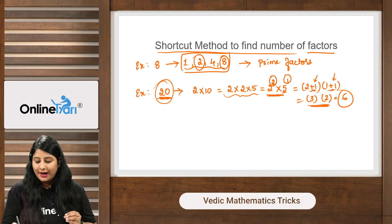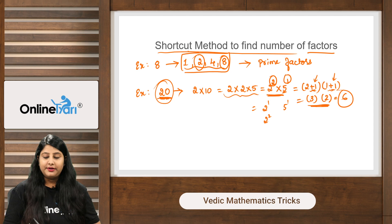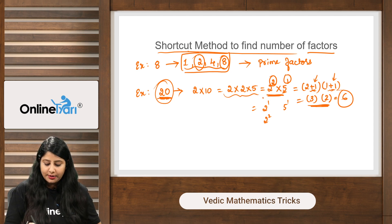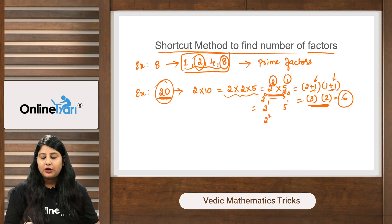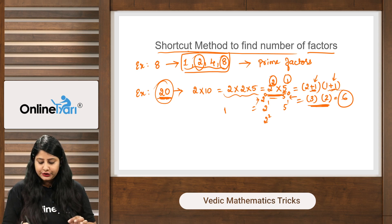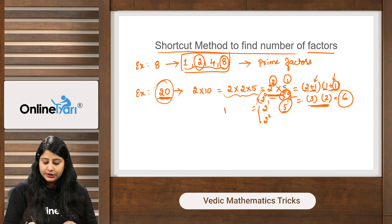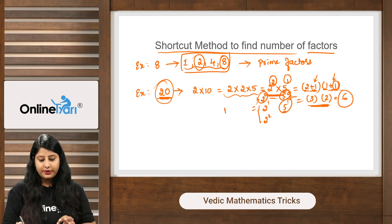You might wonder why we add 1. For 2², the powers used are 2⁰, 2¹, and 2². We must include 2⁰ = 1 as well. Similarly, 5⁰ = 1 is also one of the combinations. That's why we add 1 in each case — to account for the zero power. This gives the correct total number of factors.